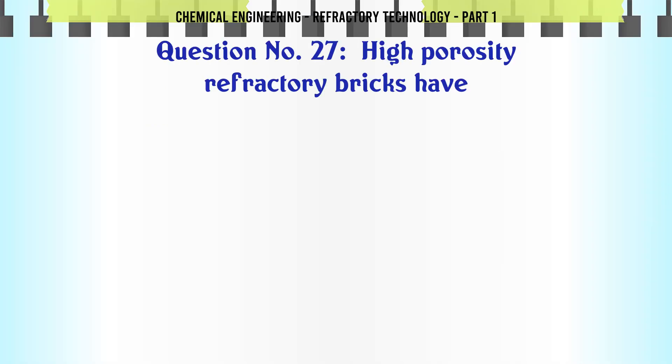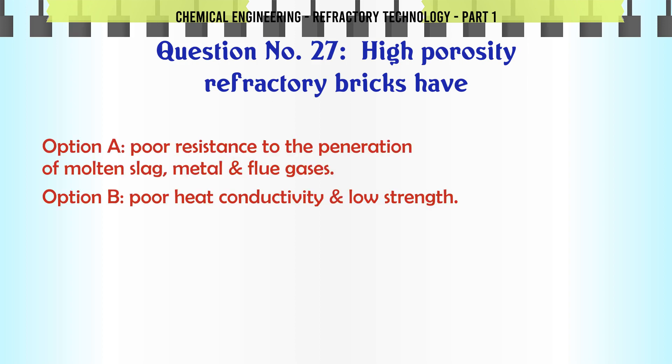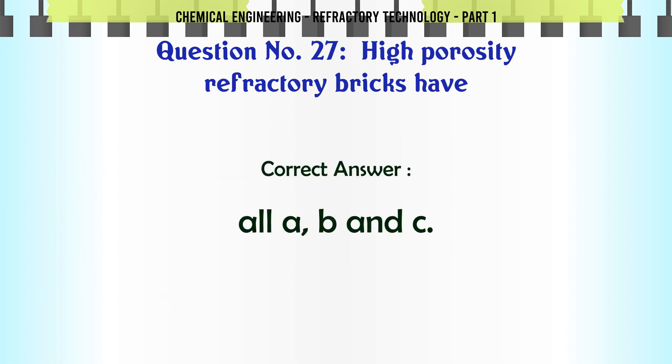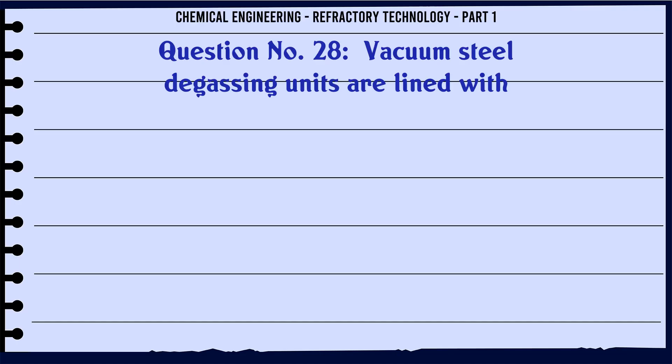High porosity refractory bricks have: A. Poor resistance to the penetration of molten slag, metal and flue gases, B. Poor heat conductivity and low strength, C. Better thermal spalling resistance, D. All A, B and C. The correct answer is All A, B and C.